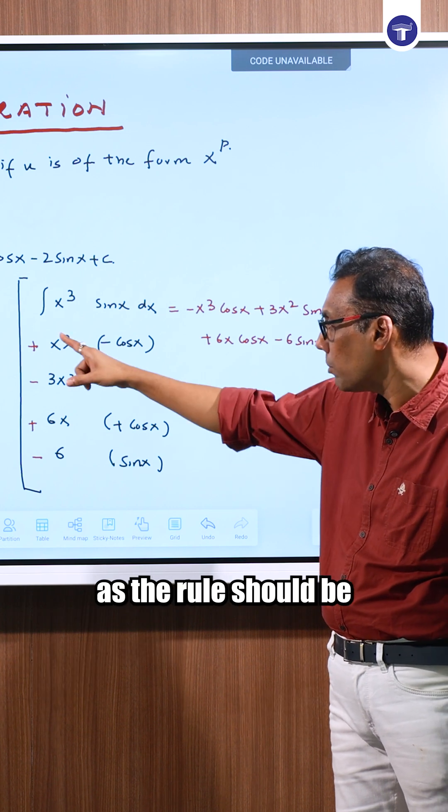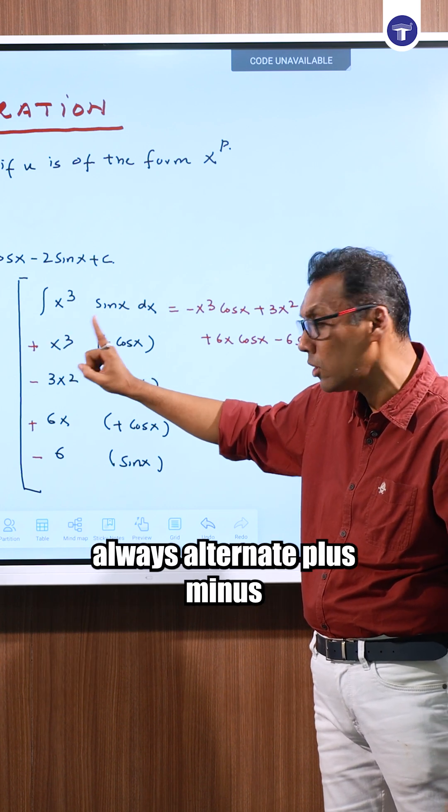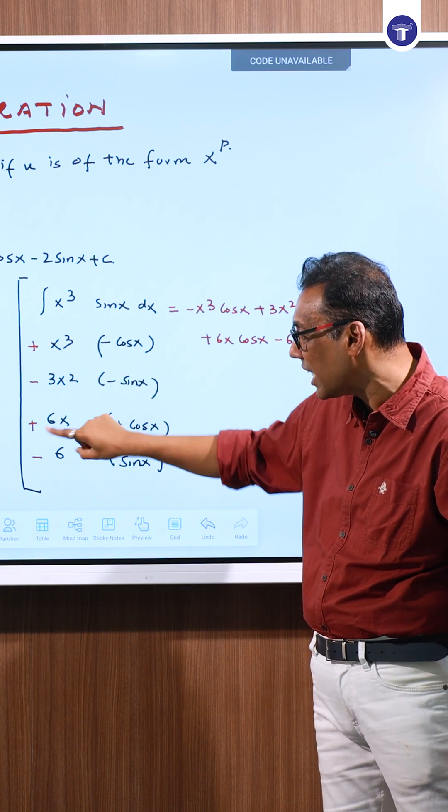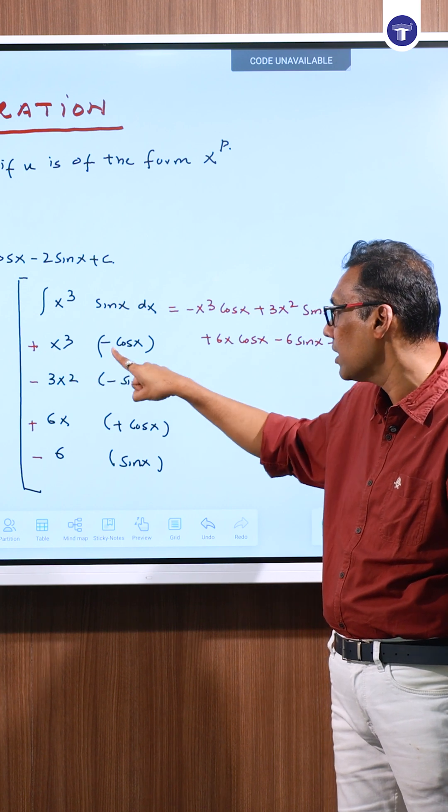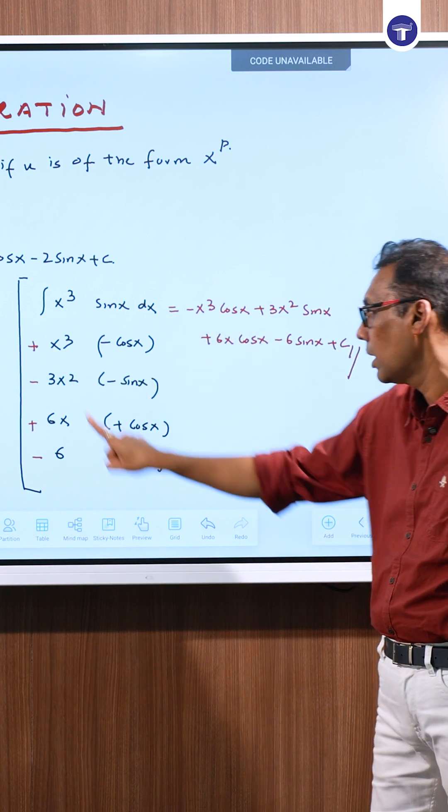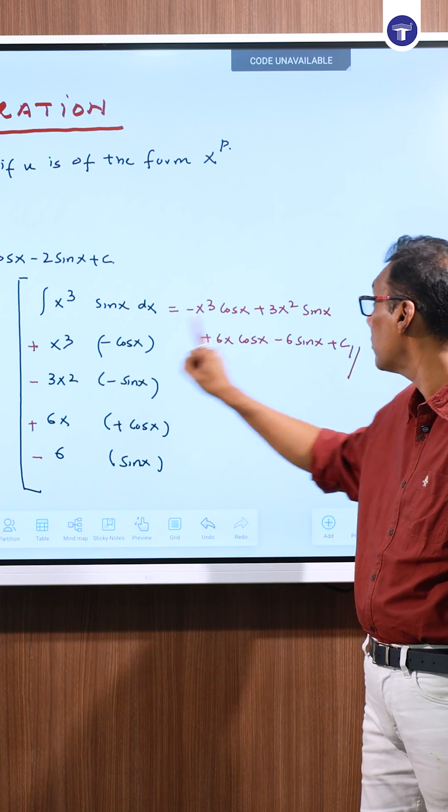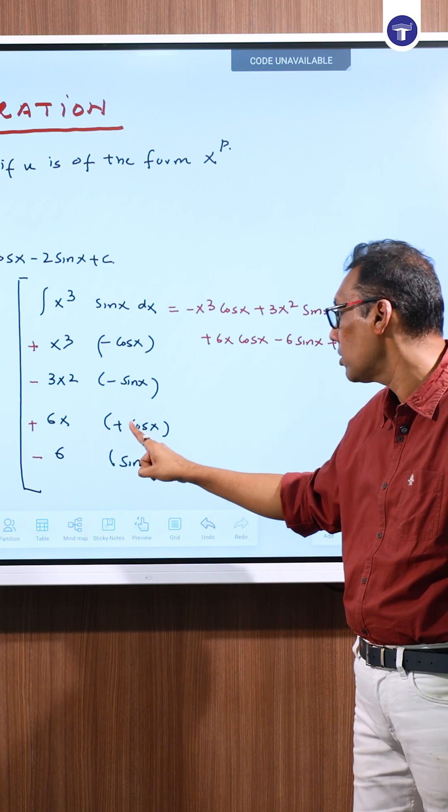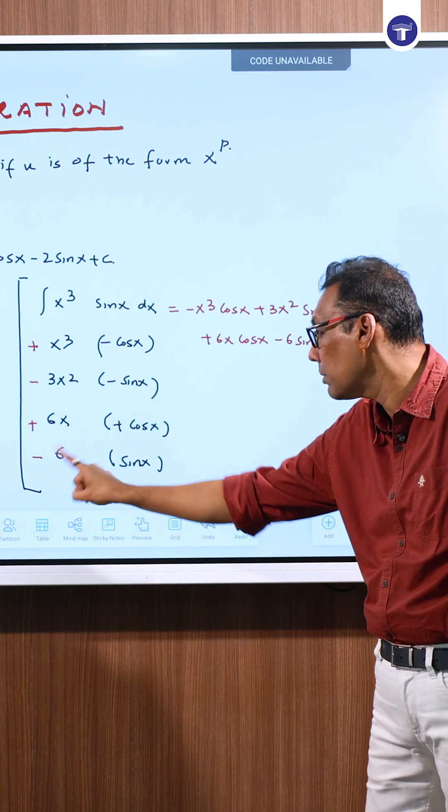As a rule, it should always be alternating plus minus, plus minus. This becomes: minus x³ cos plus 3x² sin plus 6x cos and minus 6 sin.